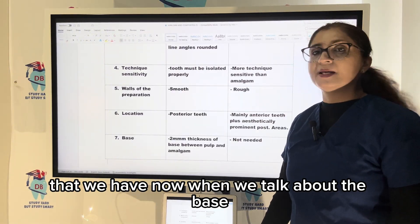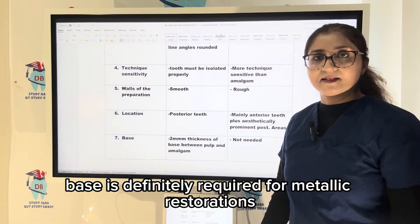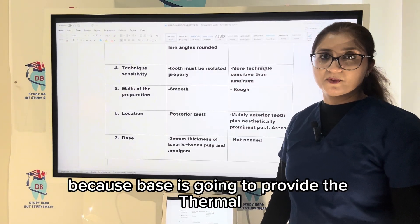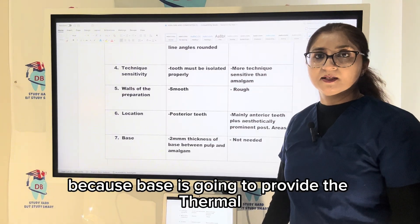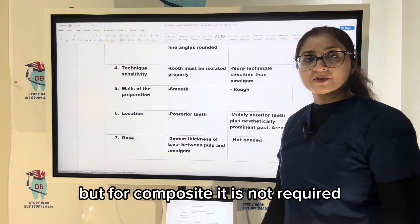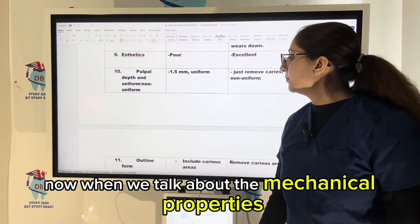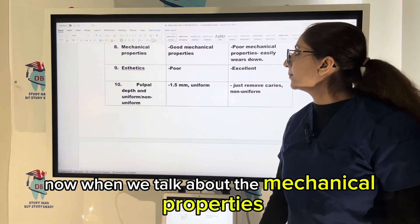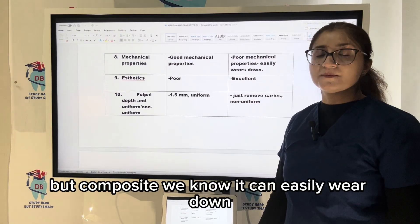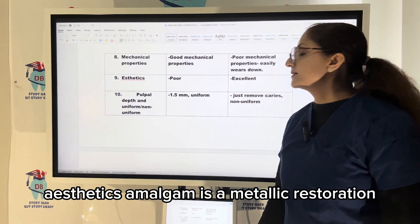When we talk about the base, a base is definitely required for metallic restorations like amalgam and gold because it provides thermal and mechanical insulation. But for composite, a base is not required. Amalgam has good mechanical properties, but composite can wear down more easily.